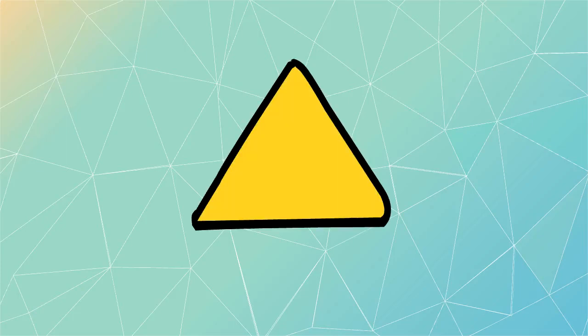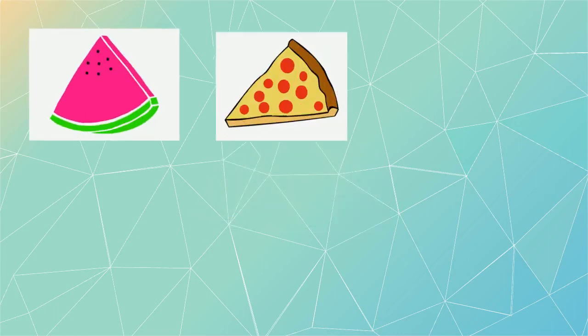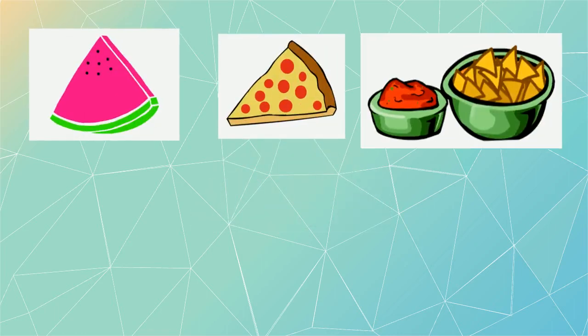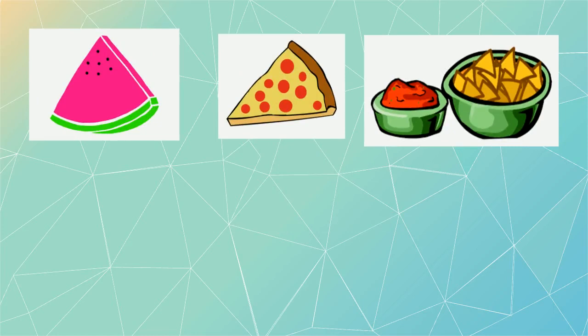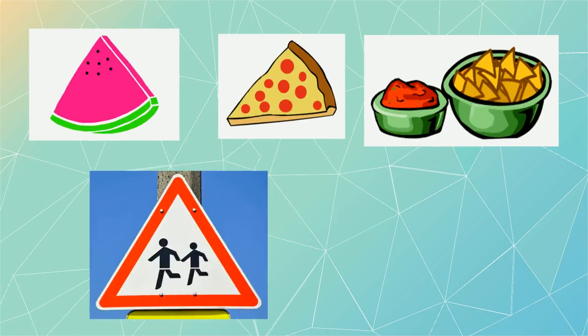There are many things around us that have a triangular shape. For example, a watermelon piece, the pizza piece, or the nachos, or the traffic triangular sign, or the end of an arrow.